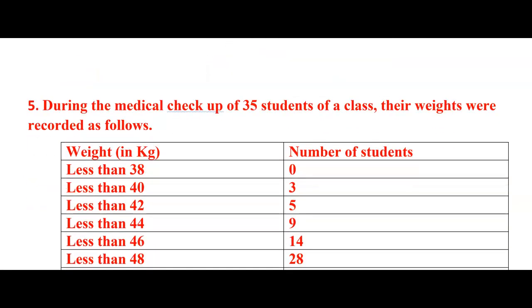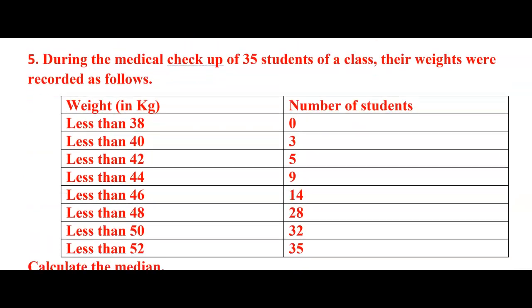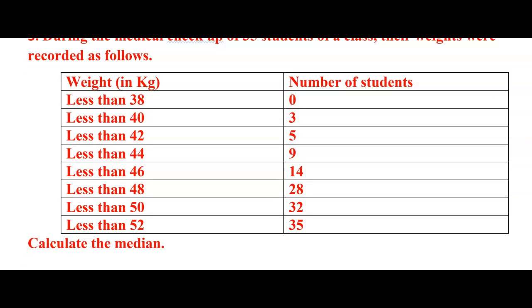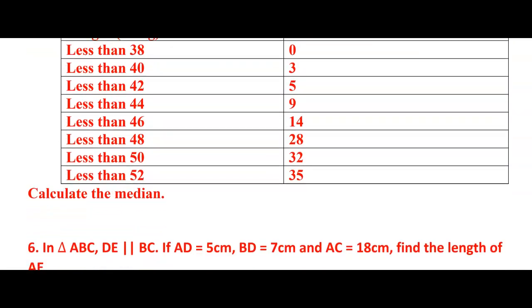And next, coming back to question number 5. You can see here. During a medical checkup of 35 students of a class, their weights were recorded as follows. They have given the weight in indirect form, they have given number of students, and they are asking us to calculate the mean. They are asking us to calculate the mean. And next question.